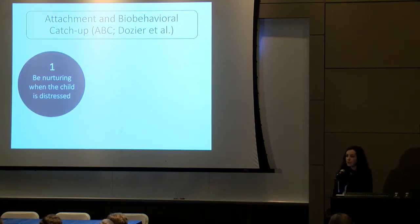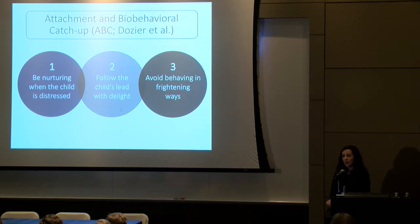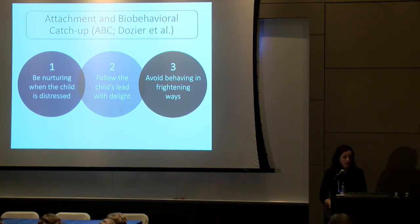It really narrowly focuses on enhancing the quality of the parent-child relationship. There are three targets that we aim to address in the context of ABC. The first is helping parents be nurturing when their babies are distressed. That might include verbal support, checking in verbally, physical soothing, or comfort.